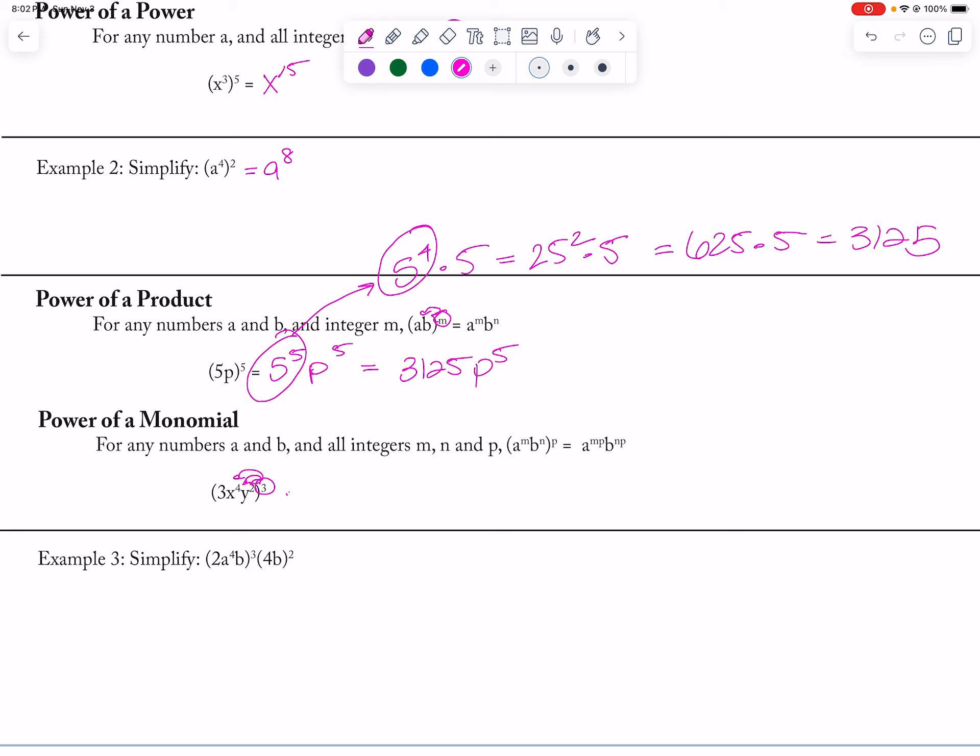Going back to this question, I'm going to distribute my 3rd now. 3 to the 3rd, x to the 4 times 3, y to the 2 times 3, so I get 27 x to the 12th y to the 6th.